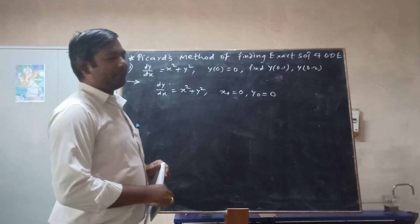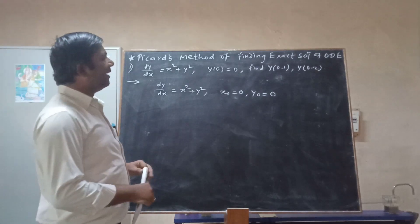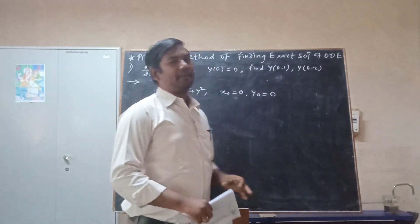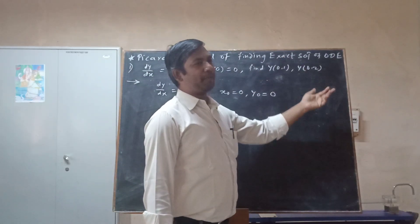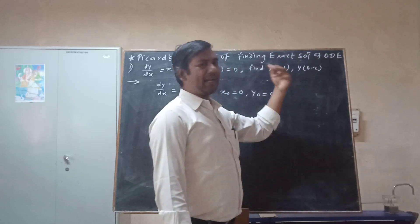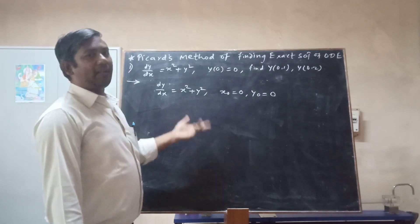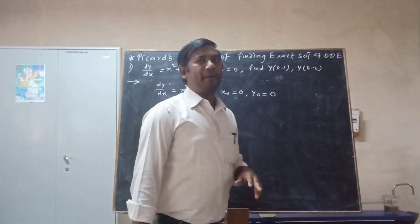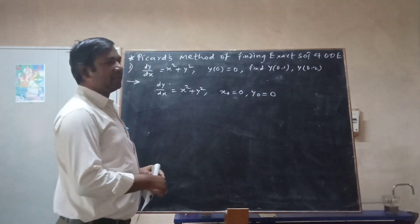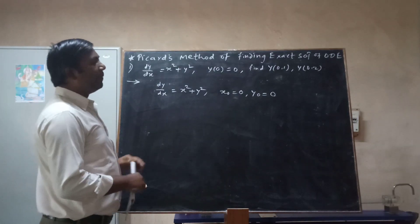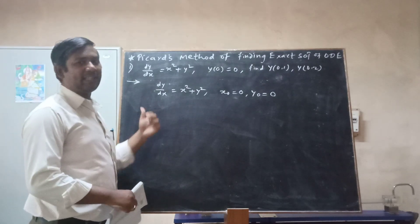In this method, we first find the general solution using a technique, and then we can find any requested values such as y(0.1), y(0.2), y(1), y(2), or any other. To find the general solution, this is an iterative process — we will perform two iterations. This is the key difference between previous methods and Picard's method.